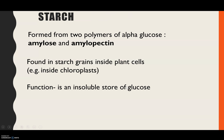Starch is created from two polymers. Both of those polymers are created from alpha glucose, and where the glycosidic bond forms is what creates a slightly different structure — you can get amylose and amylopectin. It's found in plant cells, specifically in grains of starch inside chloroplasts, and its function is an insoluble store of glucose.